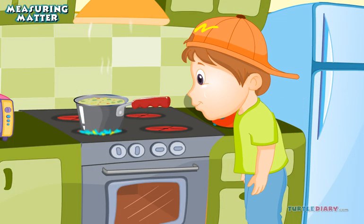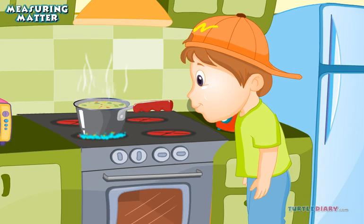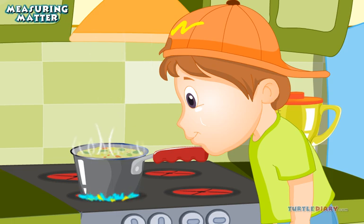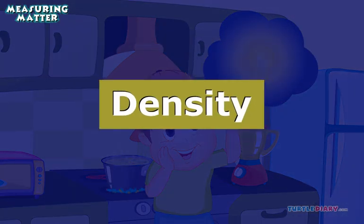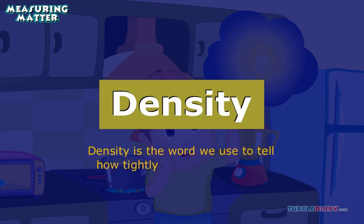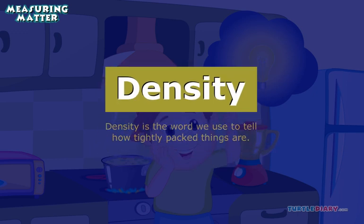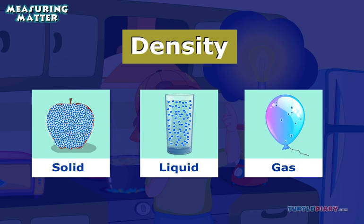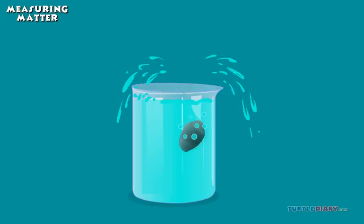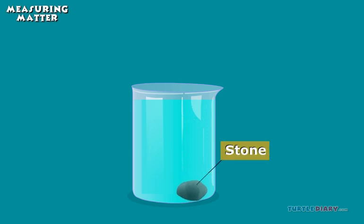After sorting the food, Matt begins to watch the pot of soup cooking on the stove. He notices that there are some vegetables floating on the top of the soup. Matt has discovered another way of measuring matter: density. Density is the word we use to tell how tightly packed things are. Solids, liquids, and gases have different densities. When something has more density, it sinks, and something less tightly packed will float.